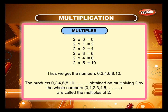The products 0, 2, 4, 6, 8, 10 obtained on multiplying 2 by the whole numbers 0, 1, 2, 3, 4, 5 are called the multiples of 2.